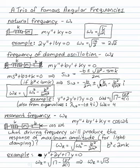B squared has to be less than 4mk. Otherwise, the square root would not produce an imaginary number. It would not produce oscillation.